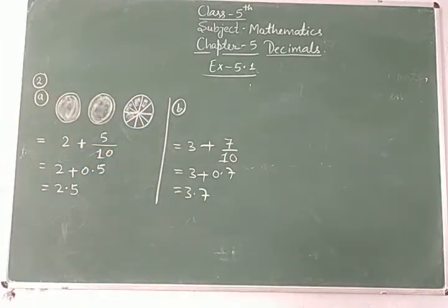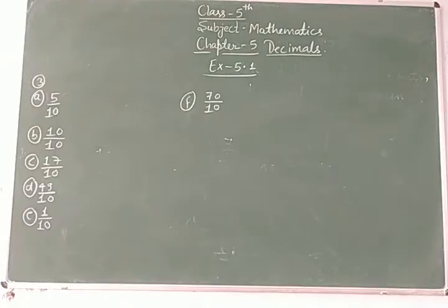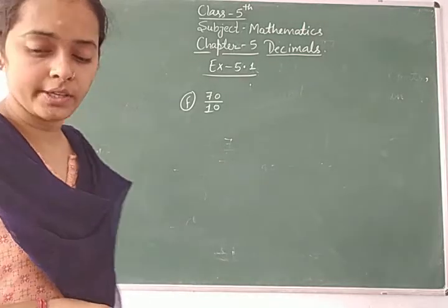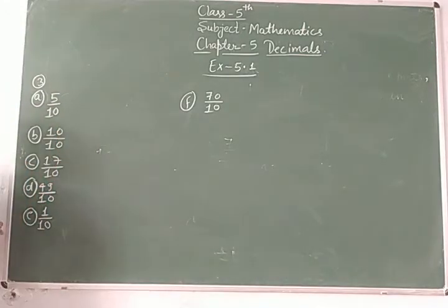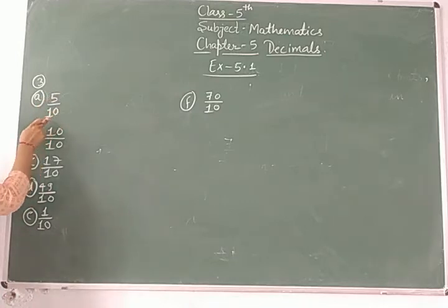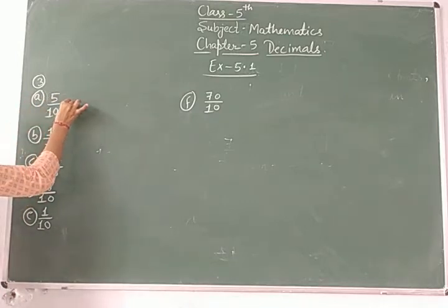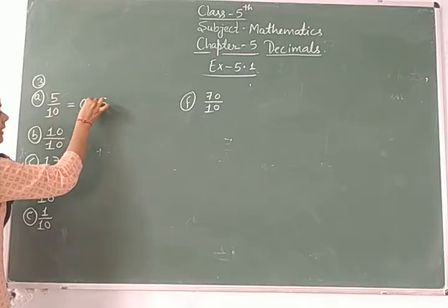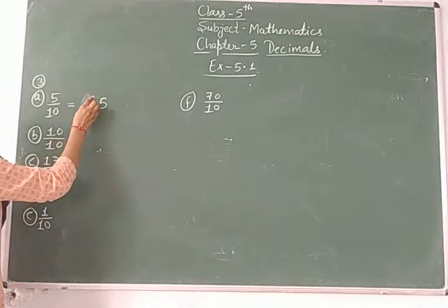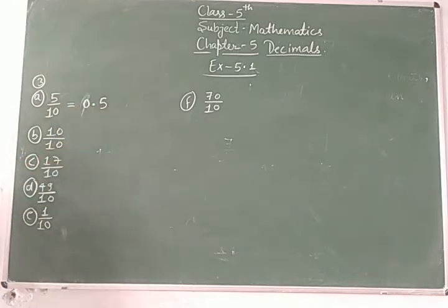Now let's continue with question number three: write each of the following fractions in decimals. These are fractions we need to write as decimals. For five upon ten: the denominator is ten, which means one zero. Place the point one position from the right, and write five to the right of the point — giving 0.5.